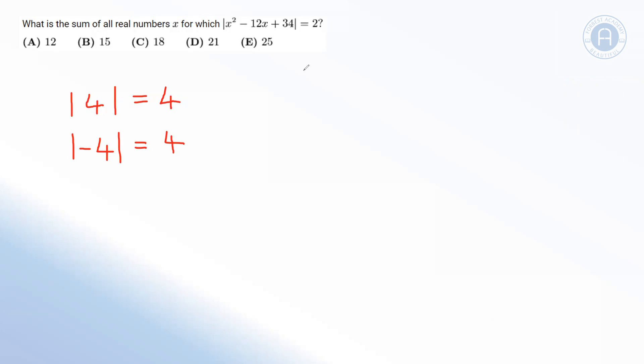So the modulus function in this question is taking x squared minus 12x plus 34 and saying if you're positive, you can stay positive. If you're negative, you're going to become positive. So what that means is we actually have two scenarios here.